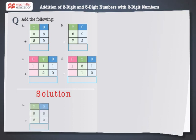Let's solve the first problem. Add the digits at the 1's place first. Regroup 17 as 1 ten and 7 ones. Now add the digits at the 10's place: 1 plus 9 plus 8, which is equal to 18.